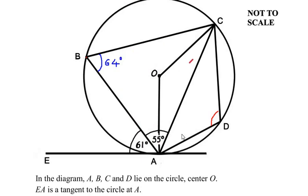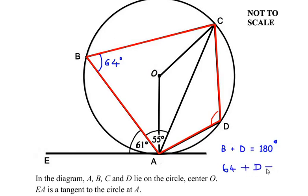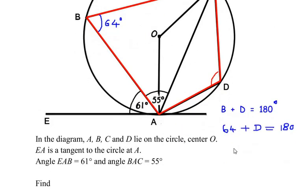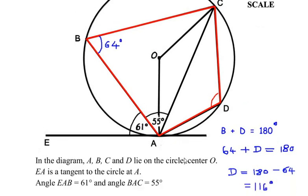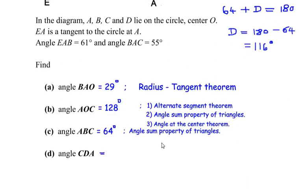In our circle, A, B, C and D form a cyclic quadrilateral because all four vertices are on the circumference. We already found angle B as 64 degrees. Since angle B is opposite to angle D, we add them: 64 plus angle D equals 180 degrees. So angle D equals 180 minus 64, which gives us 116 degrees. Therefore angle CDA is 116 degrees by the cyclic quadrilateral theorem.